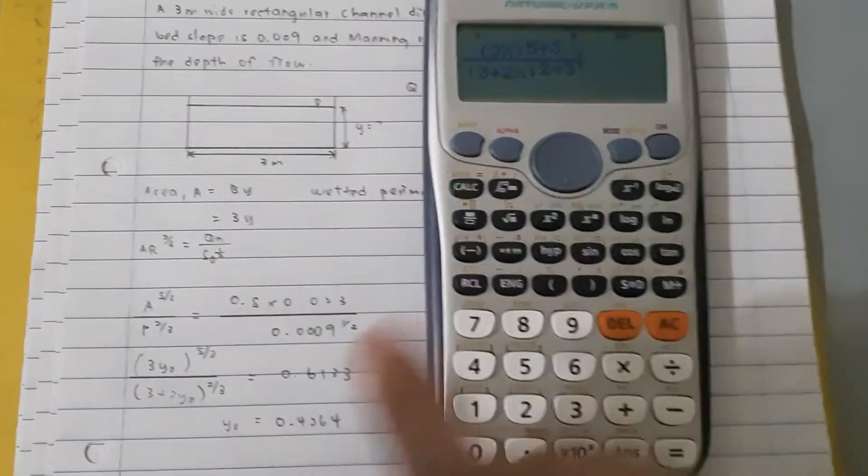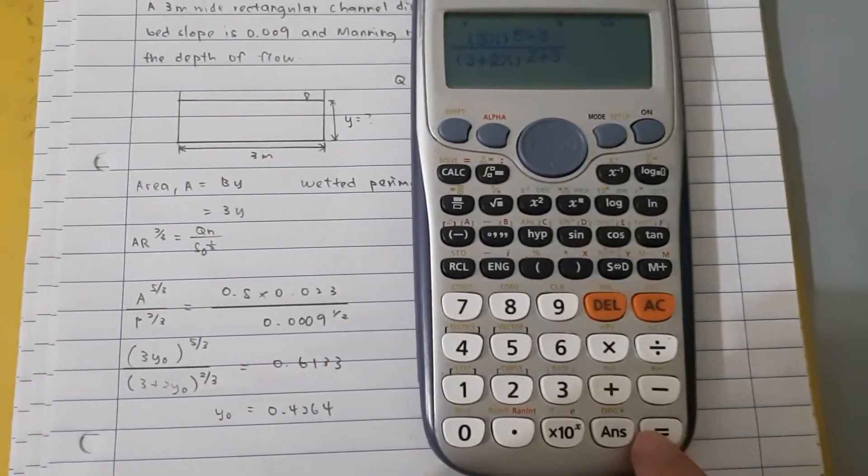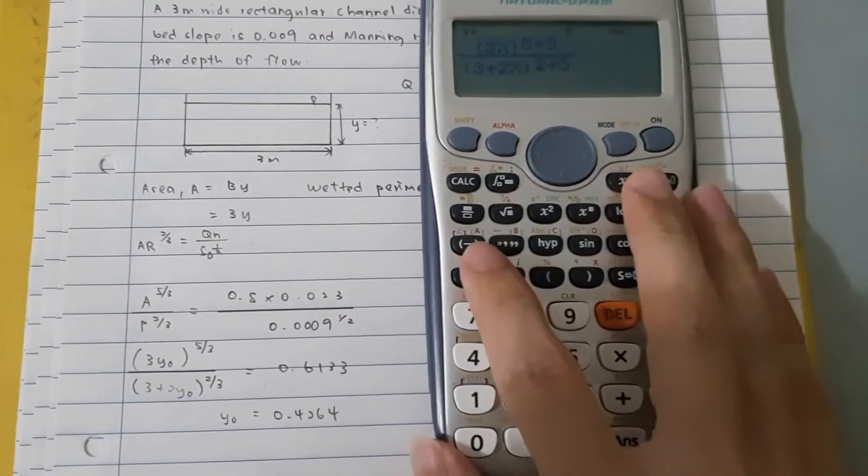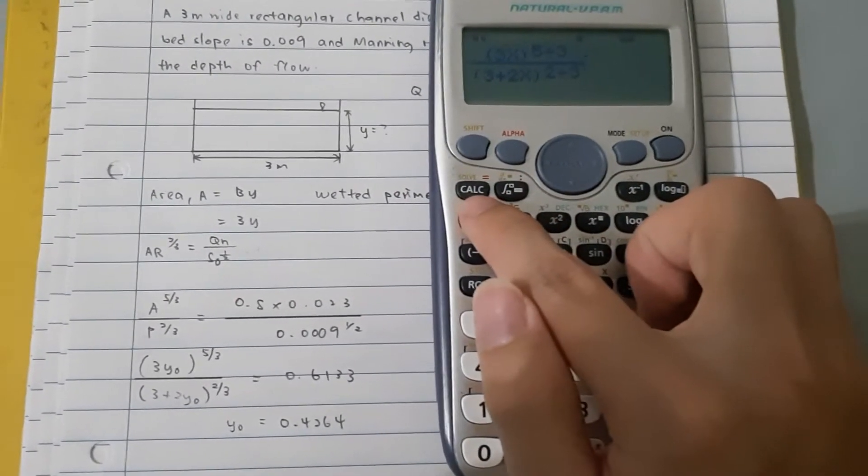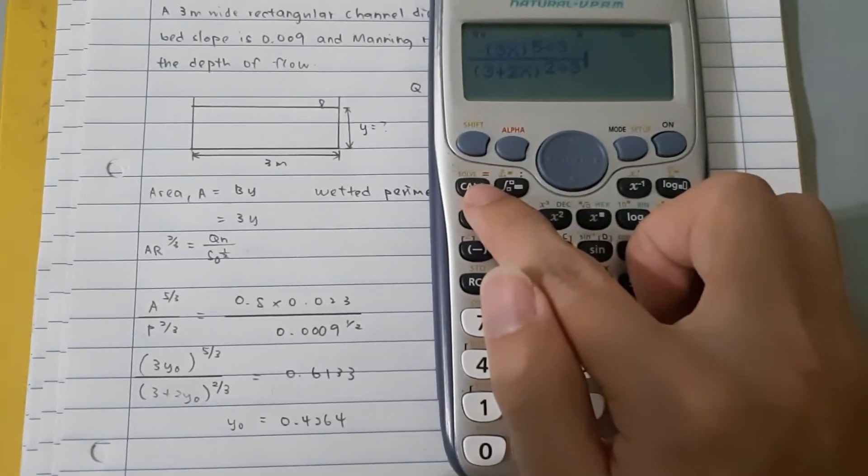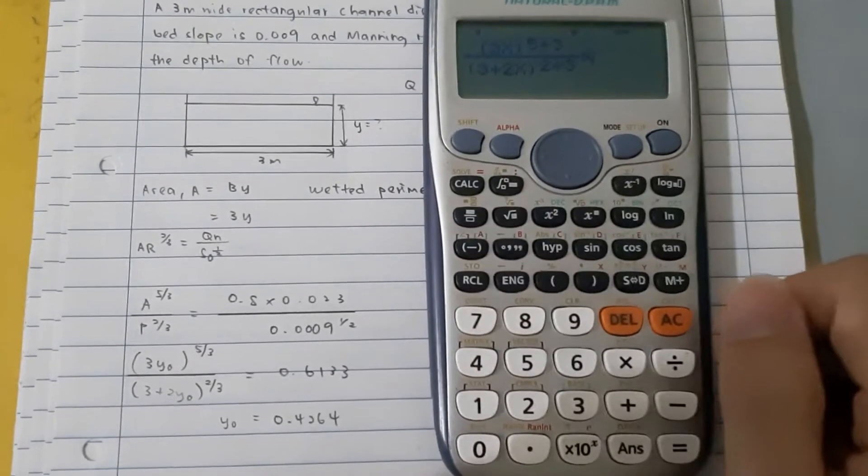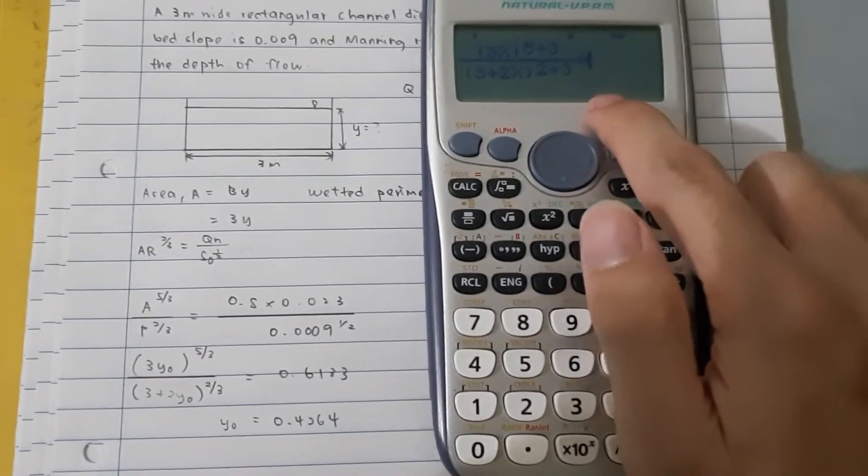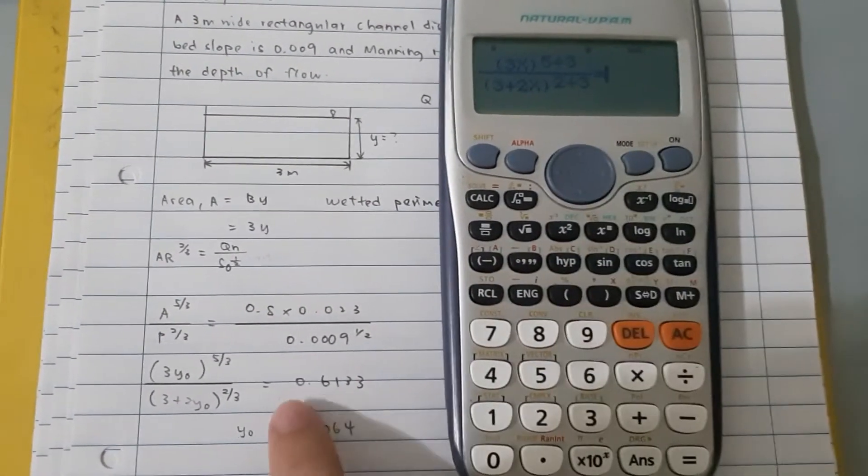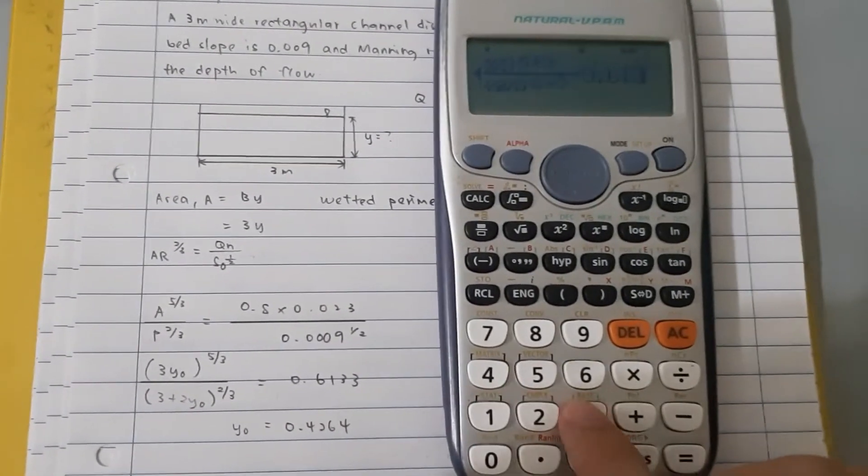Then, for the equal sign here, we must not press the equal button here. Instead of that, we have to press the alpha button here first. Then, press the CALC button because this CALC button is actually representing the corresponding function which is equal sign, equal function. Then, after we get the equal sign, we continue pressing our equation is equal to 0.6133.